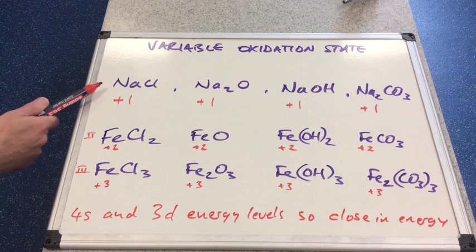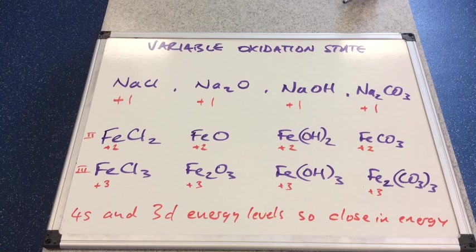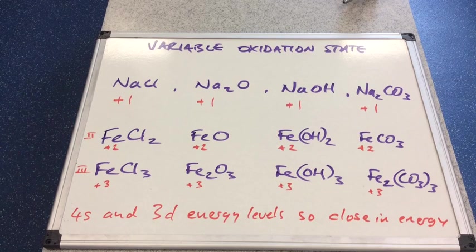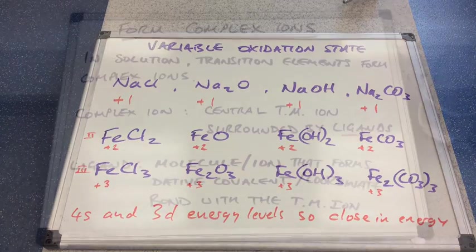Whereas for sodium, that's not the case. Once that outer electron is gone, the ionization energy is too high for sodium to lose another electron, and so it has a fixed oxidation state of plus one. But the transition elements can vary.